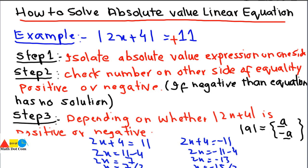Whenever we get multiple roots, we have to check whether both are valid solutions, because we sometimes get an extraneous solution that is not actually a root of the given equation. Let's check both values of x by substituting them back into the original equation and verifying whether the left-hand side equals the right-hand side.